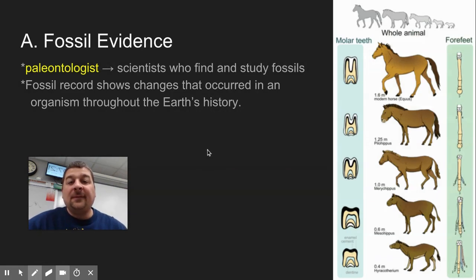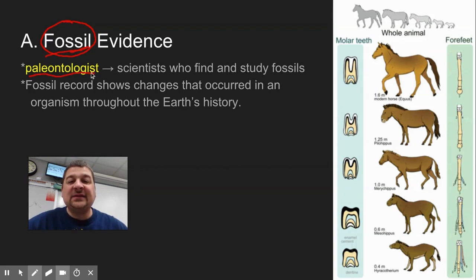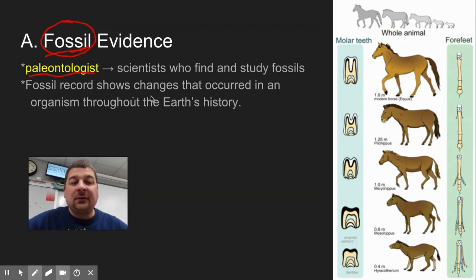One of the first things almost any scientist will bring up when we talk about evolution and proof or evidence of evolution, they're going to talk about fossils. This comes from the work of paleontologists — the scientists who study and find fossils. The fossil record gives us a lot of records of creatures across time.